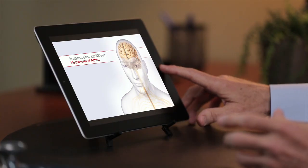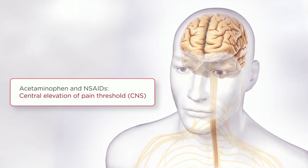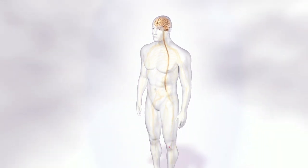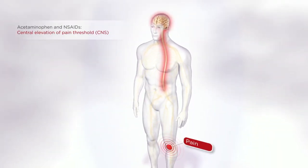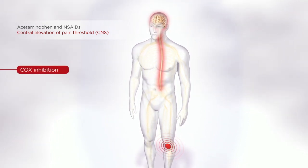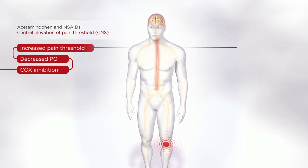Let's review the mechanistic differences between acetaminophen and NSAIDs — differences that you may want to keep in mind when counseling your patients about OTC analgesics. In the central nervous system, both acetaminophen and non-steroidal anti-inflammatory drugs, or NSAIDs, are thought to provide analgesia through inhibition of cyclooxygenase and the consequent reduction in prostaglandin synthesis, thereby elevating the pain threshold.